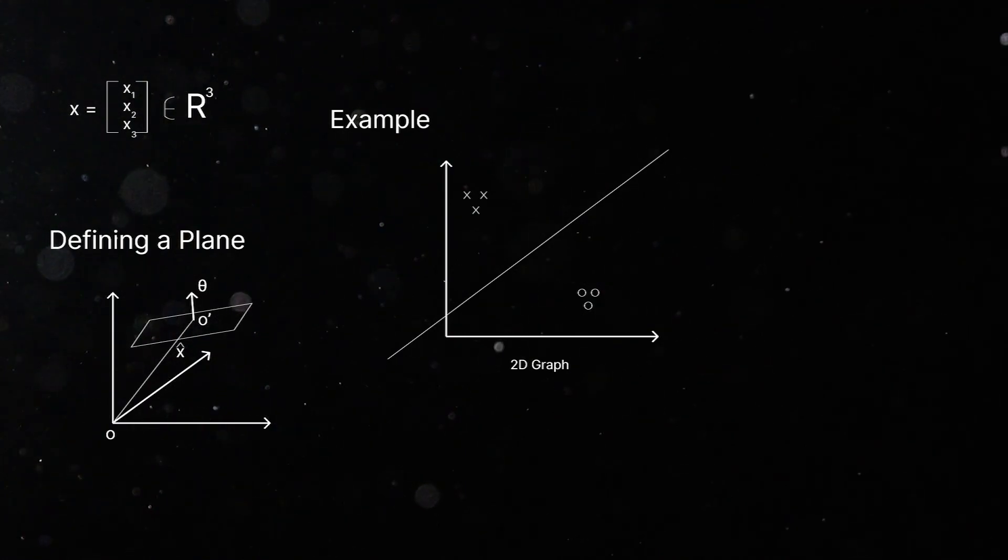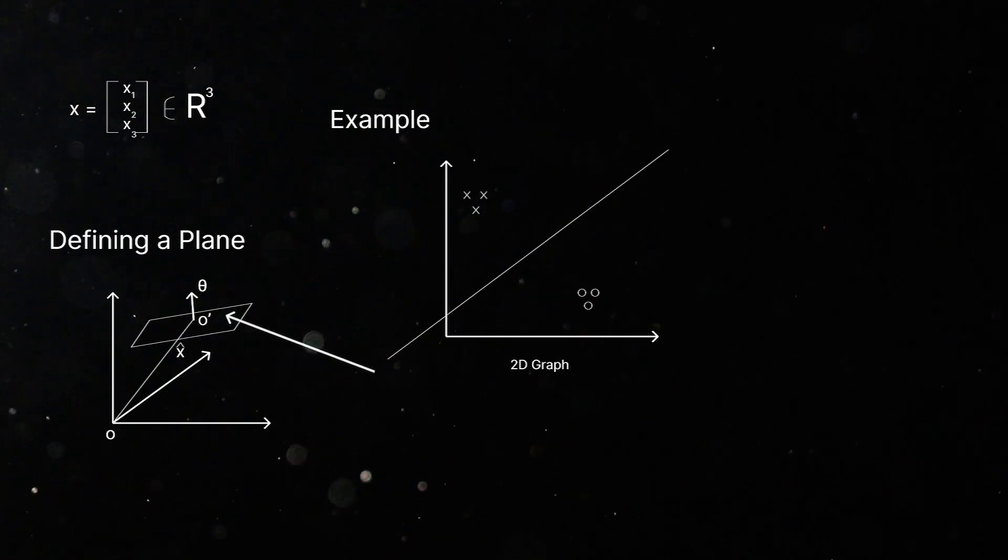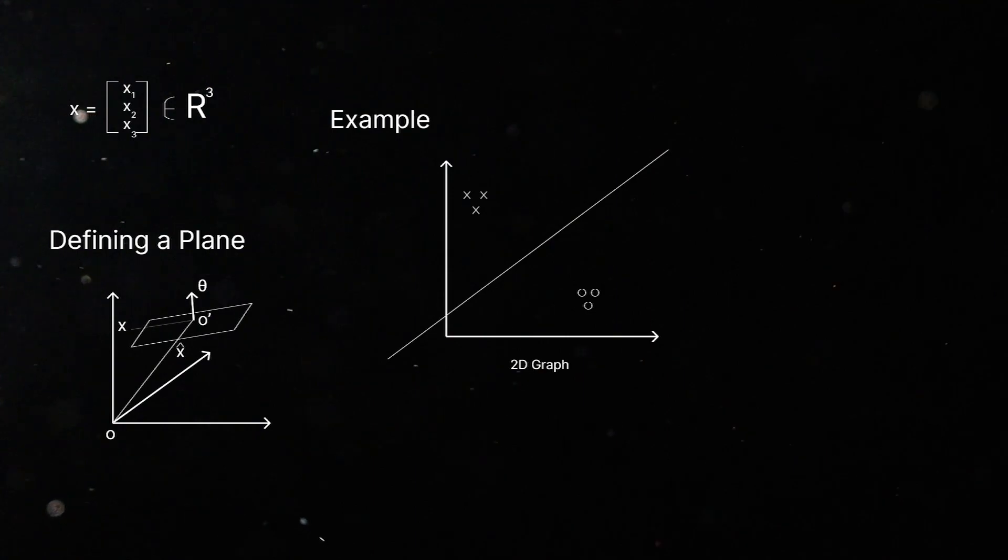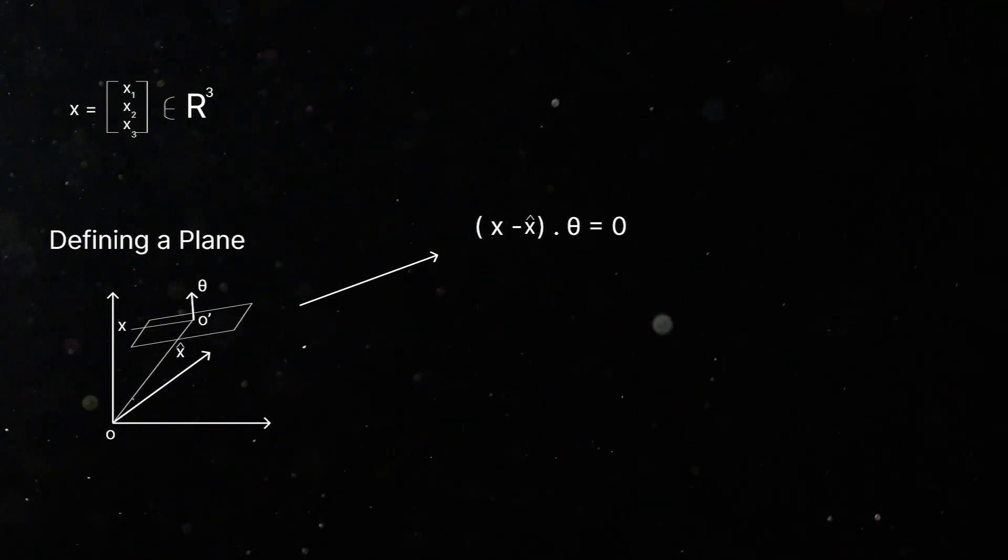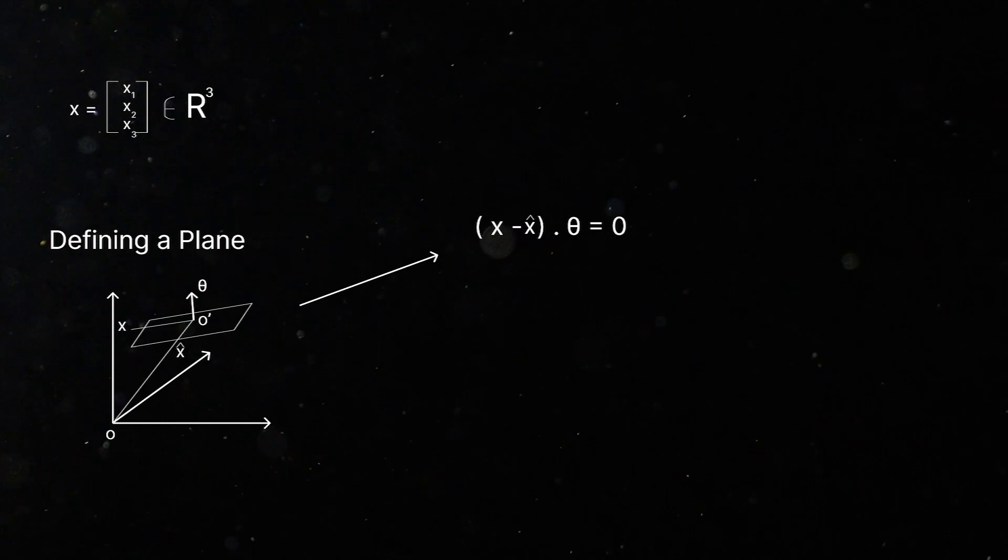So, now we want to find all of the lines or of the points which fall on this plane. So, if you take another point x, it will only be on this plane if its vector is perpendicular, draw it over here. If its vector is perpendicular to θ, so we can write it like this. So, this vector here is going to be (x minus x̂) dot θ is equal to 0.